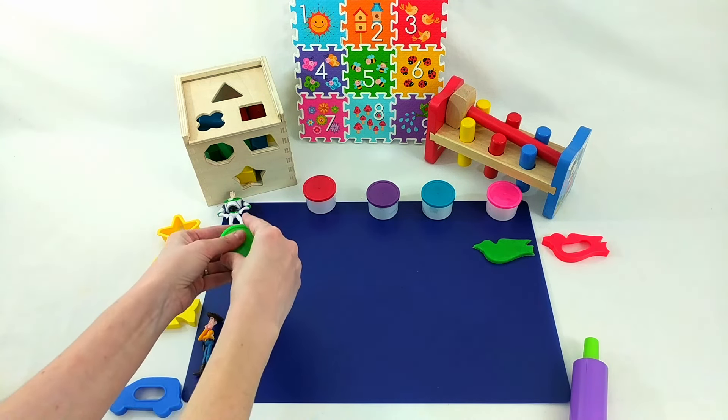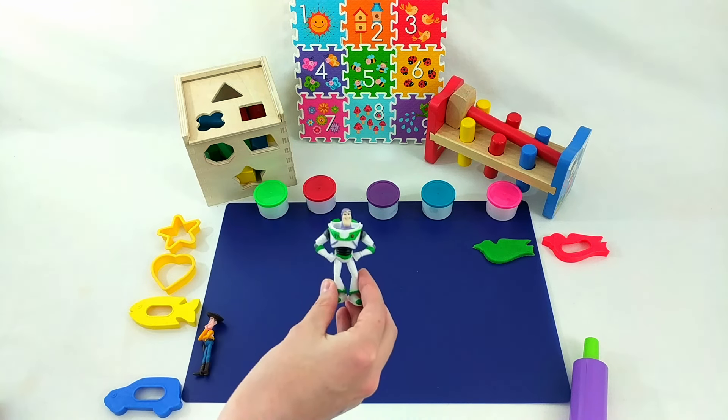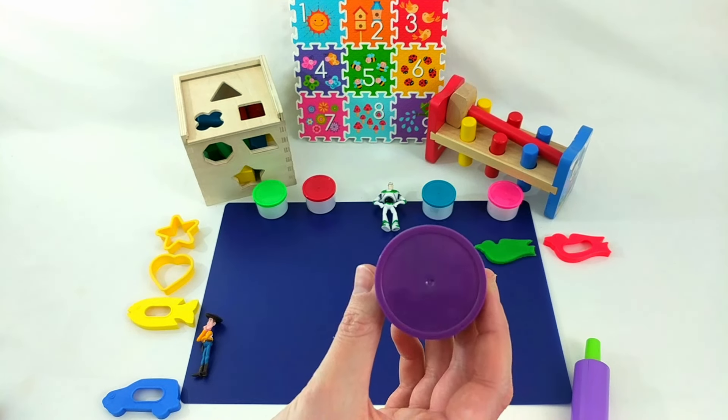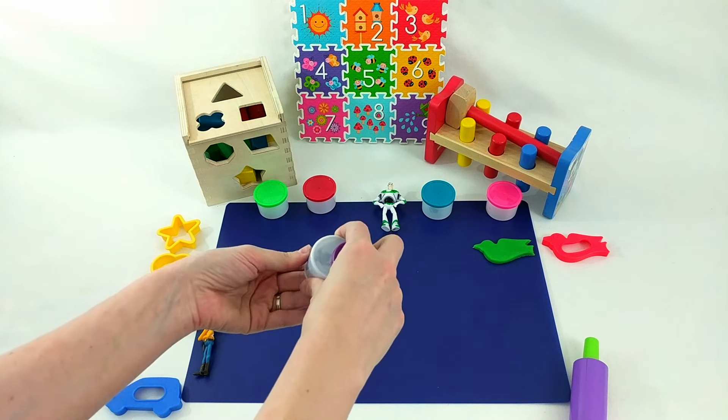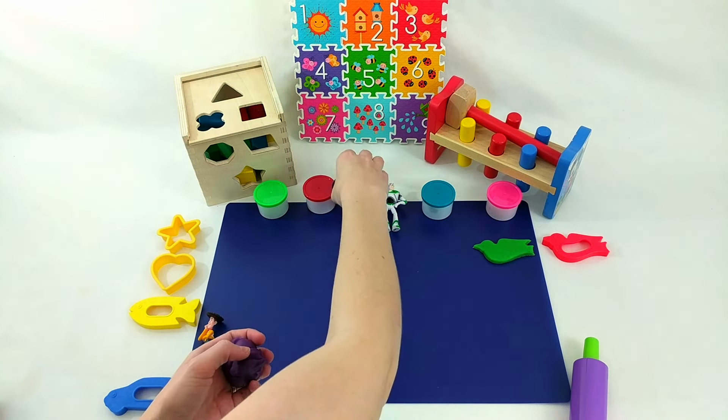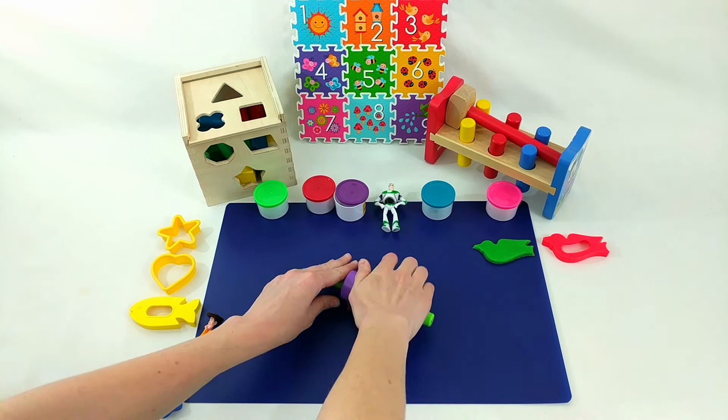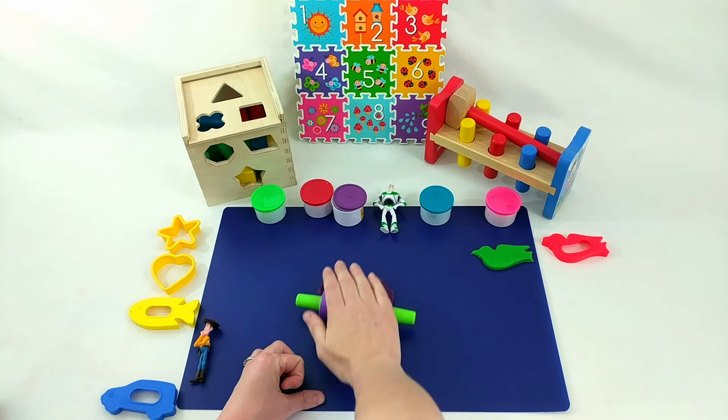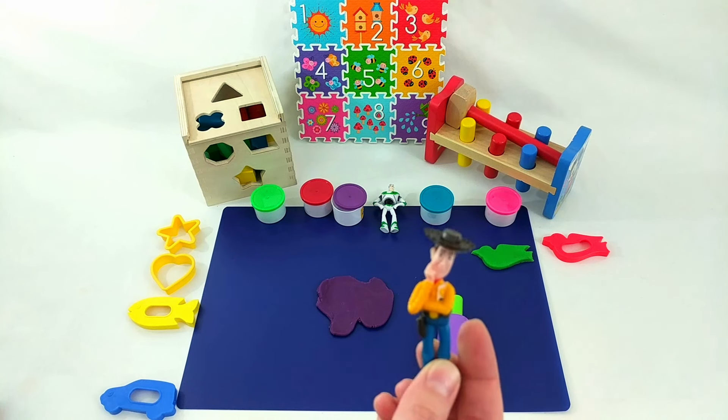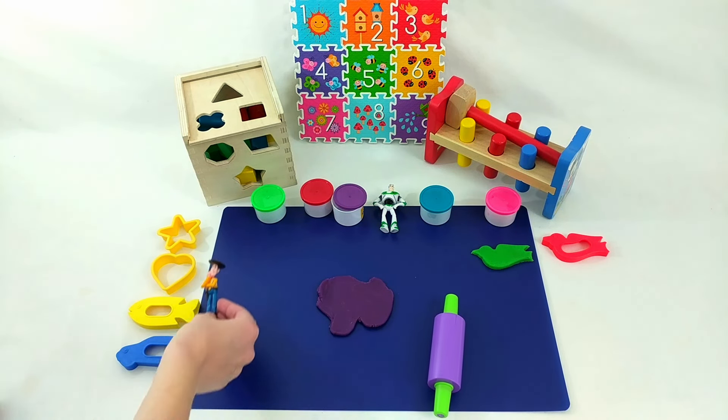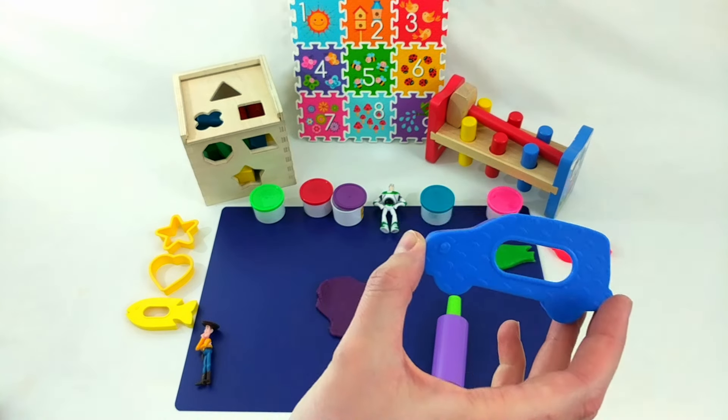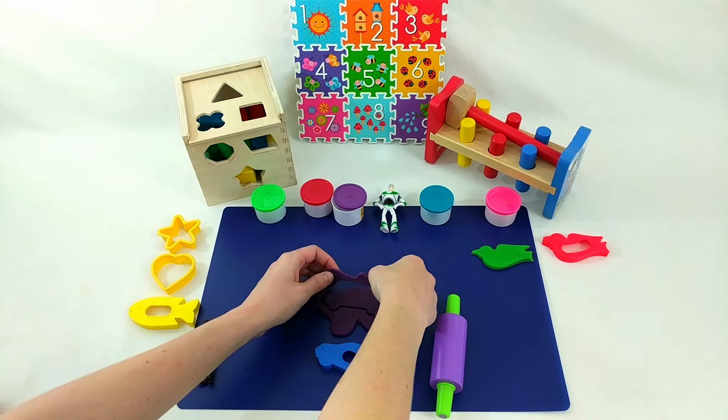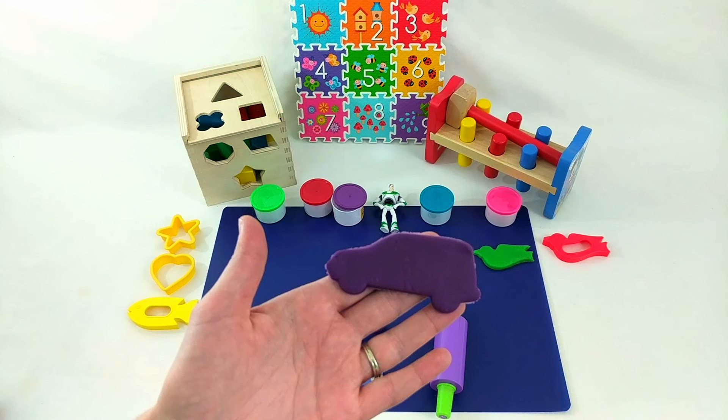What shape should we make next? First, let's choose a color. Buzz, which color should we use? Buzz chose purple. Great, let's get it out. Make it nice and flat so that we can cut out a shape. Okay, Woody, it's your turn. What shape are we gonna make with the purple Play-Doh? A car. Okay. There we go. There's our purple car.